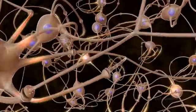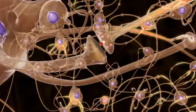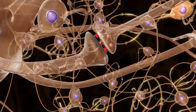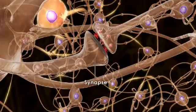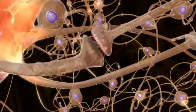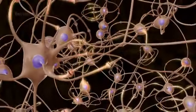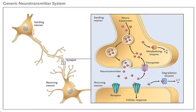In a three-neuron system, each neuron is separated from each other by a microscopic space called a synapse. The synapse is the junction or relay center between neurons, and also exists between a neuron and an effector cell. Each of the cells in this three-neuron system communicates with one another through a neurotransmitter, a chemical substance released by the first neuron. The two most common neurotransmitters are acetylcholine and norepinephrine. Once the neurotransmitter has crossed the synapse, an enzyme breaks it down and the neuron is inactivated. In the absence of this enzyme, the neuron would remain activated.